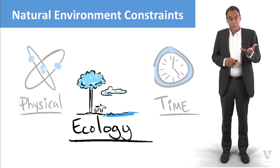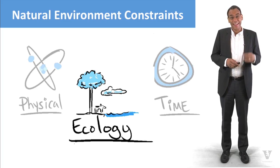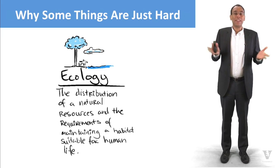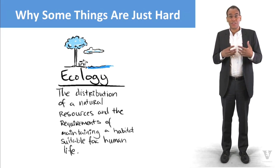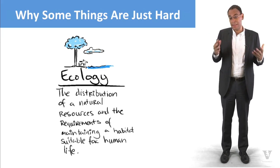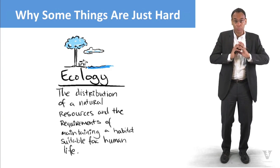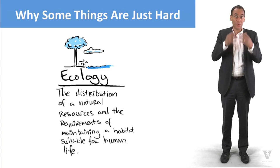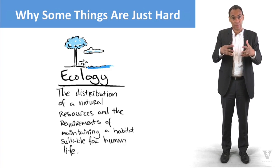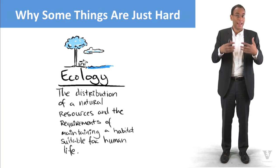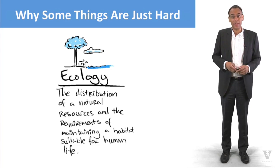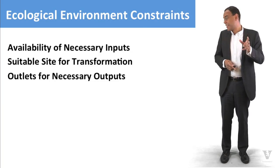The third kind of technological constraint we're going to talk about has to do with ecology — the distribution of natural resources and our ability to sustain life within the system that we place our innovation in. We're putting our innovation in some context, so what is the effect of that context on our innovation from the ecological perspective, and the effect of our innovation on that ecosystem as well?